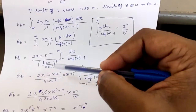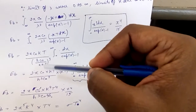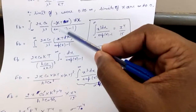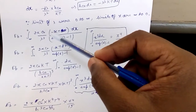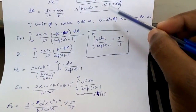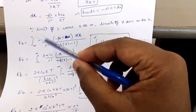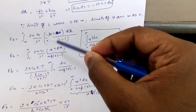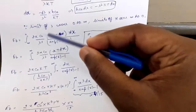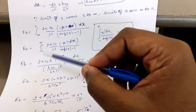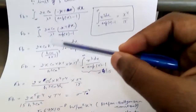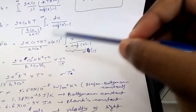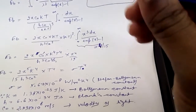Finally, putting λ = hc₀/(xkT) to convert the whole integral into x form, and since we had a minus sign but the limit was infinity to 0, I changed the limit back to 0 to infinity and the minus becomes plus — this is the property of the definite integral. After manipulating and separating out the constant terms, we get eb = 2πc₀ times the integral.